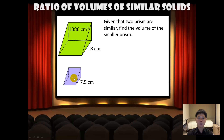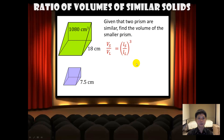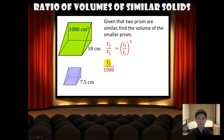Given that these two prisms are similar, find the volume of the smaller prism. Since they are similar, we shall use the formula Vs over VL equals the cube of Ls over L. Since we do not know the volume of the smaller prism and the larger prism has volume 1080, the ratio of the volumes will be Vs over 1080, and on the right-hand side we will have the cube of 7.5 over 18.